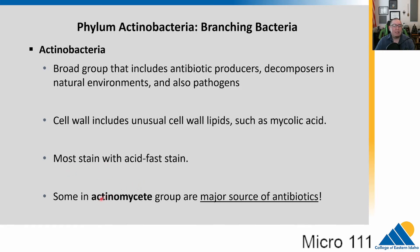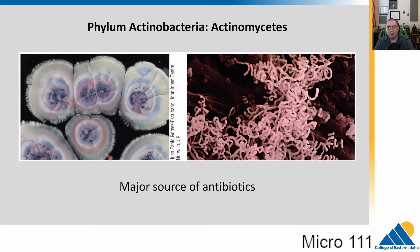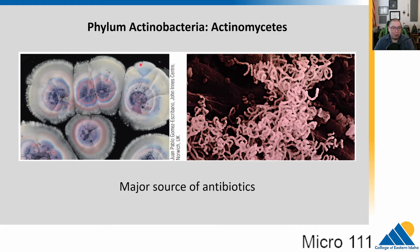The actinomycete group is a subgroup within the actinobacteria and is our major source of antibiotics. Here are some examples of actinomycetes — they kind of look like fungi, but they're actually bacteria. You can see these beautiful colors, and the little dark blue or purple dots are actually bubbles of liquid antibiotic coming out of these cells. These bacteria make antibiotics that will kill other bacteria they might be competing with. A zoomed-in version shows they have a kind of chain-like construction.